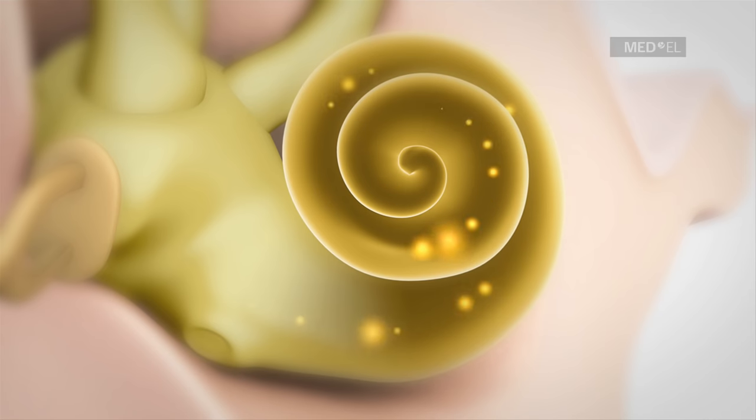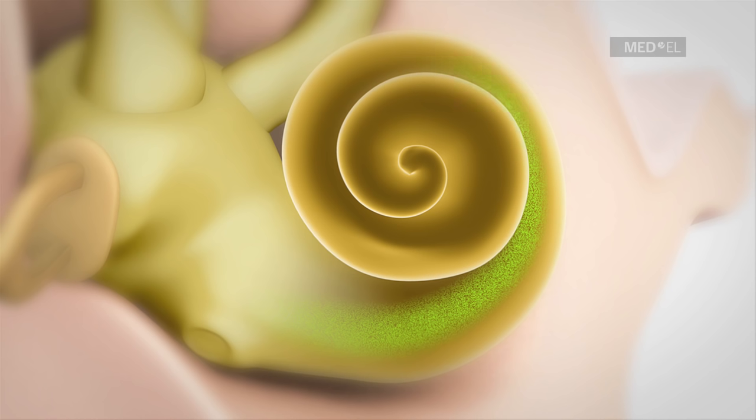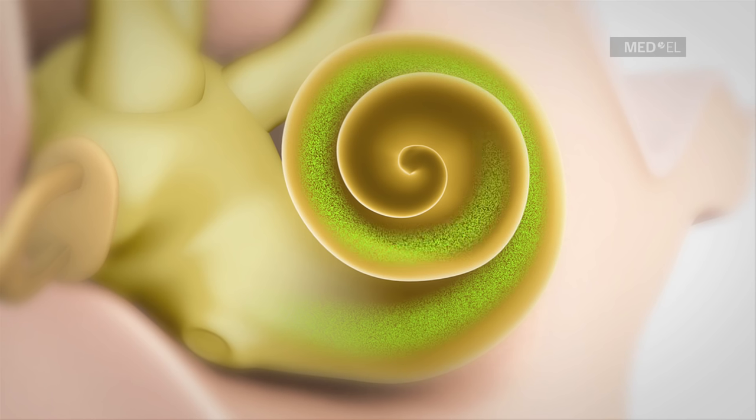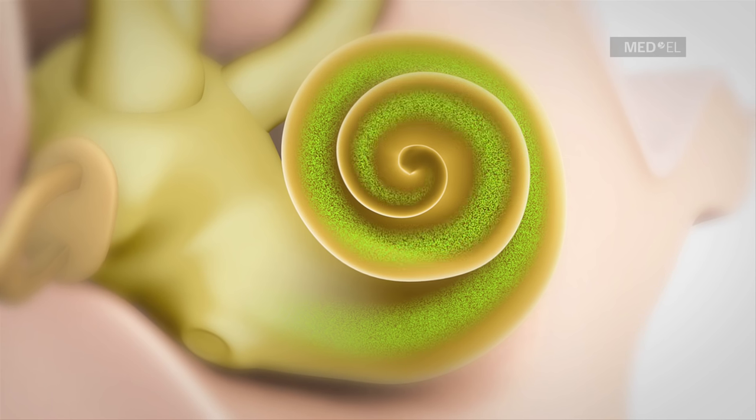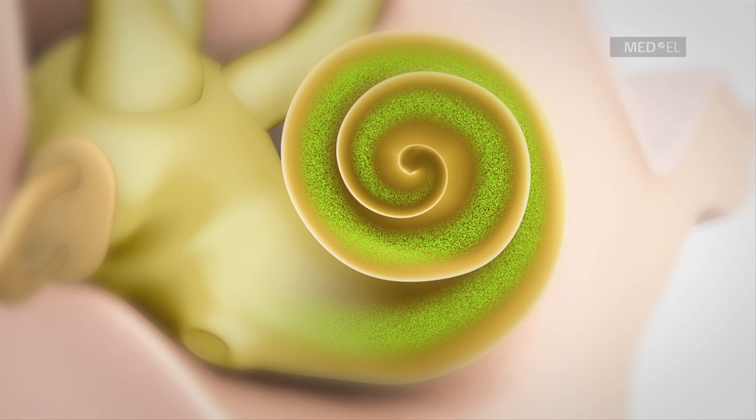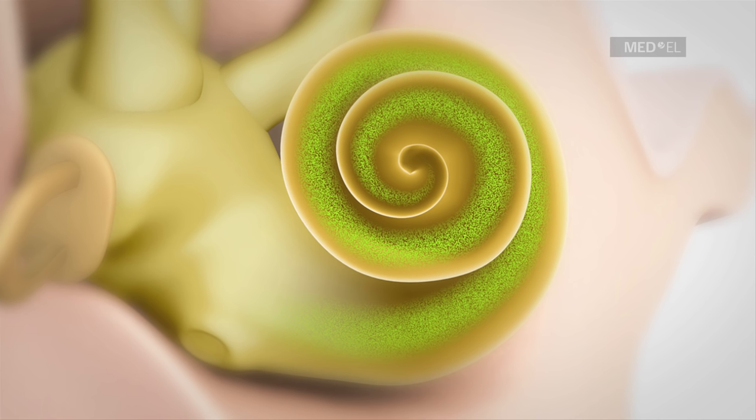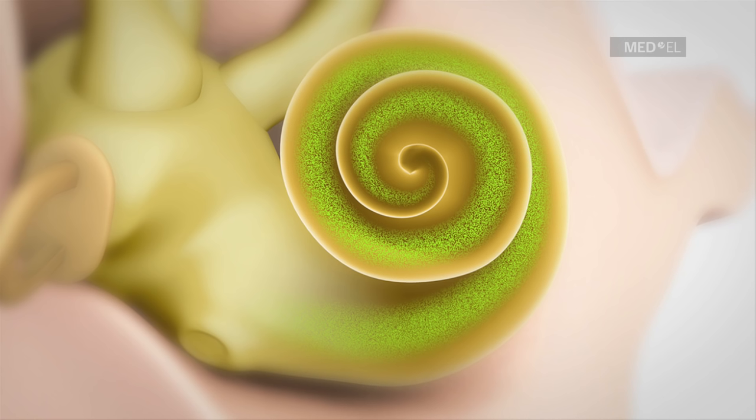Sensory cells, also called hair cells, line the entire length of the cochlea. These hair cells have varying degrees of sensitivity for the detection of different tones or frequencies. This allows the ear to perceive the entire spectrum of sound.